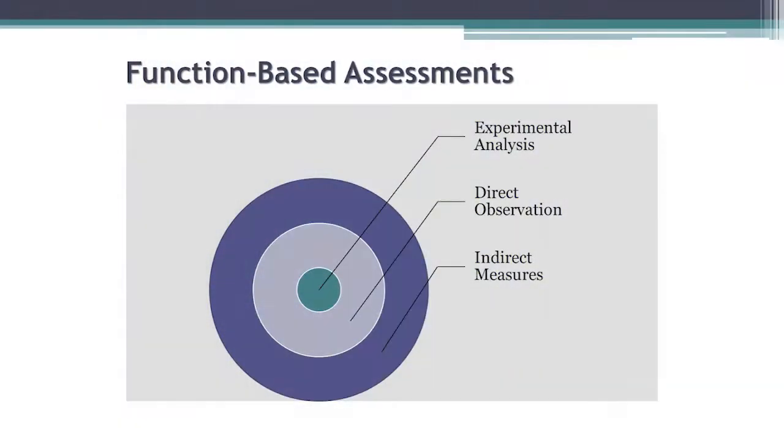So how do we get at this? With function-based assessments. Everyone here has heard about FBAs. But what an FBA means can be nebulous — there's actually a wide variety in what people understand them to be. They fall into three categories: indirect assessments, direct, and experimental analyses. As you get closer to the center of this visual, you're looking at increasingly valid assessment. Indirect measures — like rating scales and screeners — are valuable tools and often a good place to start, but they have limited validity. If your FBA consists only of indirect measures and the intervention isn't working well, there's a good chance you need to go back to the drawing board and move toward a more valid assessment.